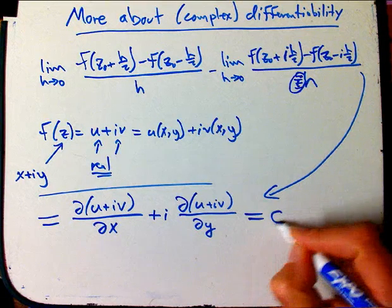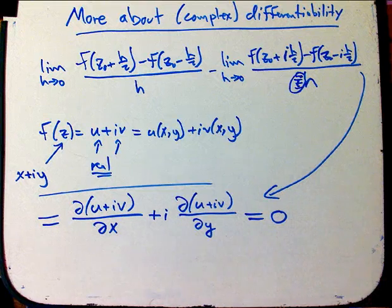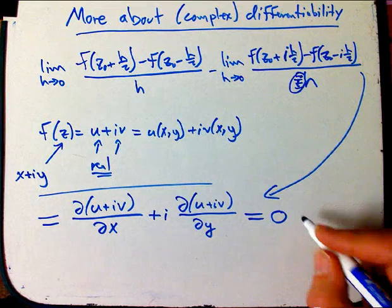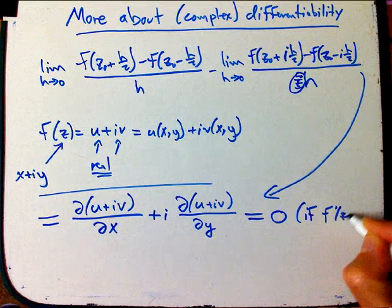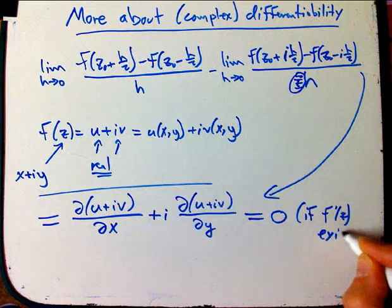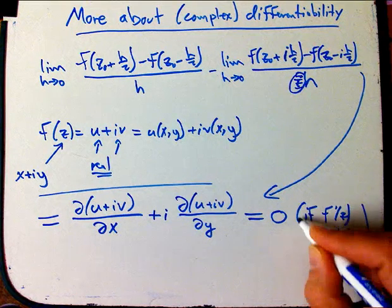And that's supposed to be zero. So that's if f prime of z exists in the complex world.